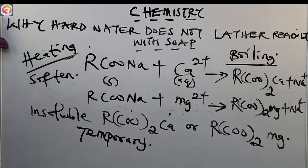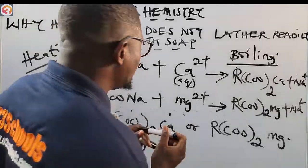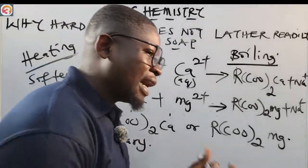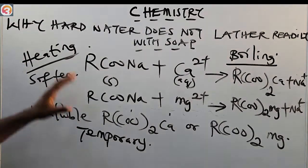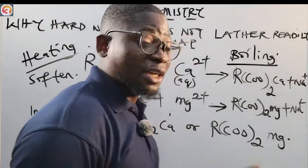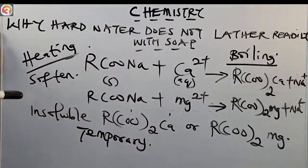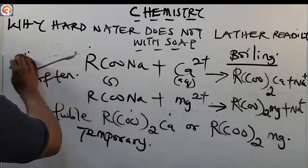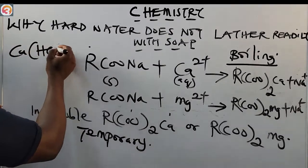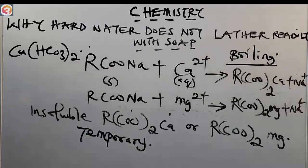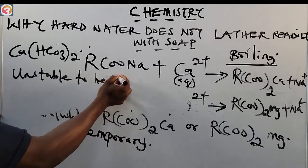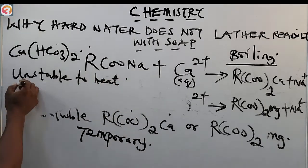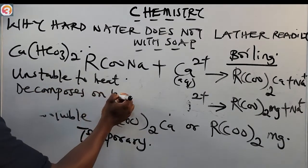Temporary hardness is due to the presence of calcium hydrogen carbonate, Ca(HCO₃)₂, or magnesium hydrogen carbonate. Ca(HCO₃)₂ is unstable to heat — it decomposes on heating, thereby softening the hard water.